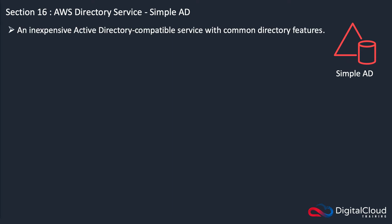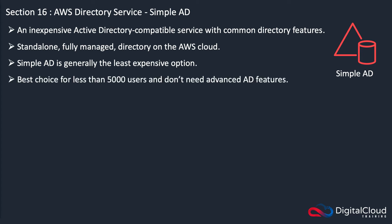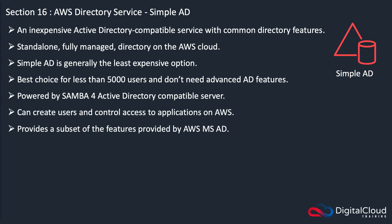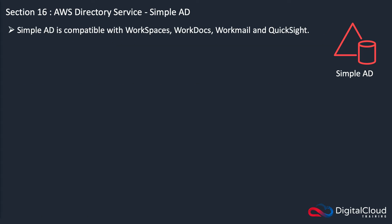The next service is Simple AD. This is not a Microsoft Active Directory but a simple Active Directory — something similar but with fewer features. It's inexpensive and Active Directory compatible, with common directory features. It's a standalone fully managed directory on the AWS cloud and generally the least expensive option. It's best if you have less than 5,000 users and don't need advanced Active Directory features. It's powered by the Samba 4 Active Directory compatible server. Features include managing user accounts and groups, applying group policies, using Kerberos-based SSO, joining Linux or Windows-based EC2 instances, and it's compatible with WorkSpaces, WorkDocs, WorkMail, and QuickSight.